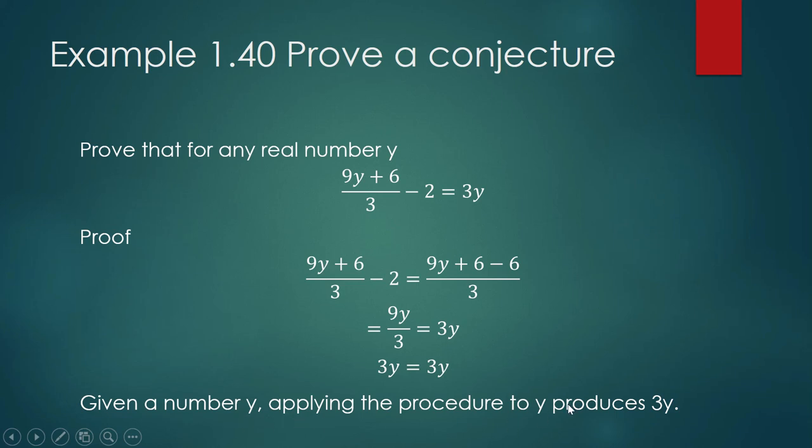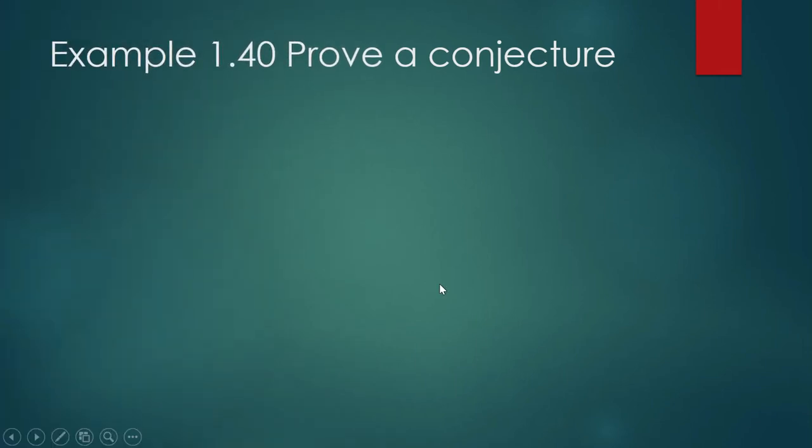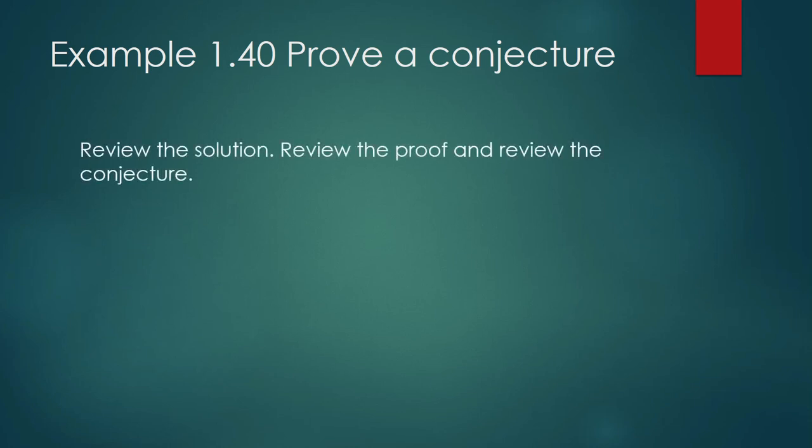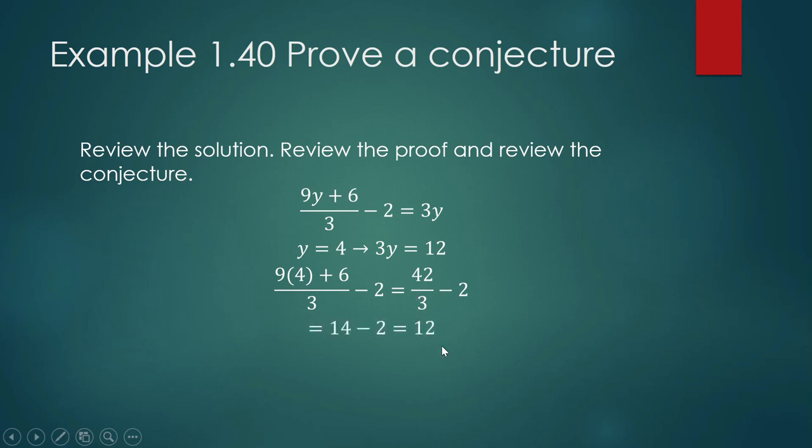The last step in Polya's four-step strategy to solve problems is to review the solution, review the proof, and review the conjecture. You can review it by doing it again, combine these rational expressions and check if it is equal to 3y. Or you can do it by testing it again. Let's say for example y is 4, will this procedure produce 12? Because 12 is 3 times 4. 9 times 4 is 36, 36 plus 6 is 42, 42 divided by 3 is 14, minus 2 is 12. So our output agrees with what we expected to get.